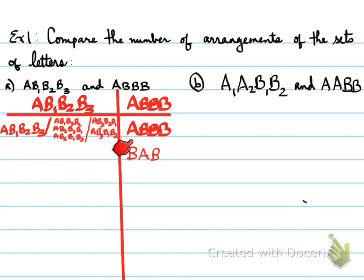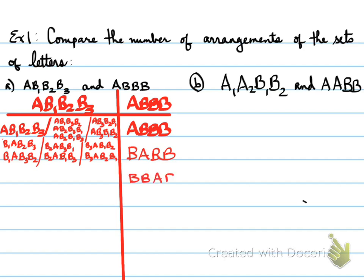Now, if I switch it around and go BABB, I will get the following. BABB, all of this, and we switch it around. And notice we have six versions of BABB. And again, we do it again for BBAB.